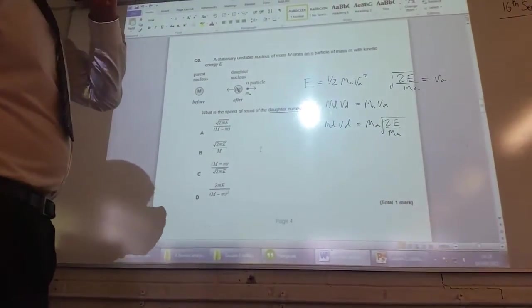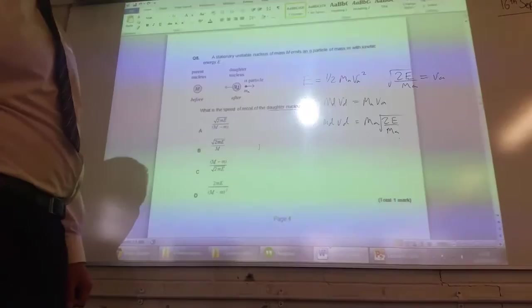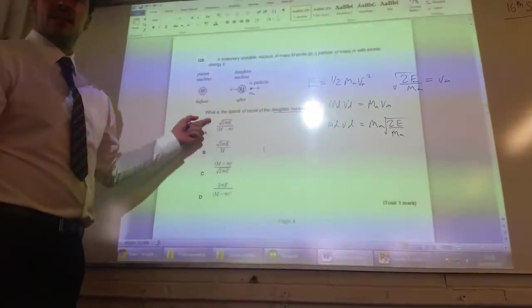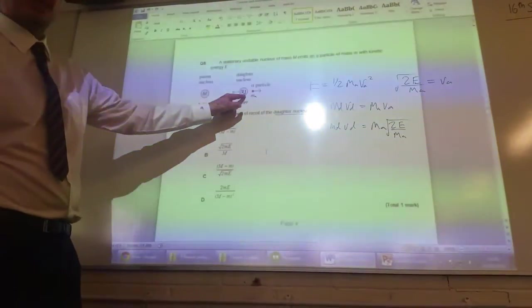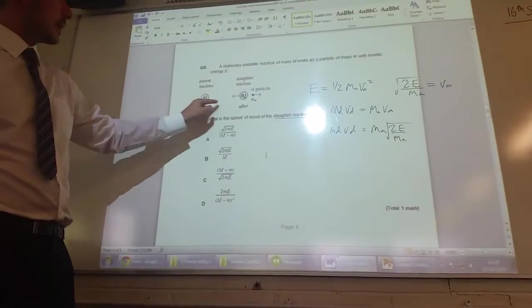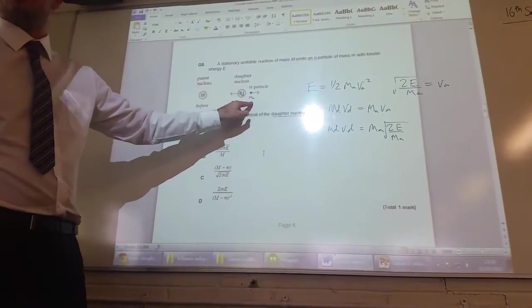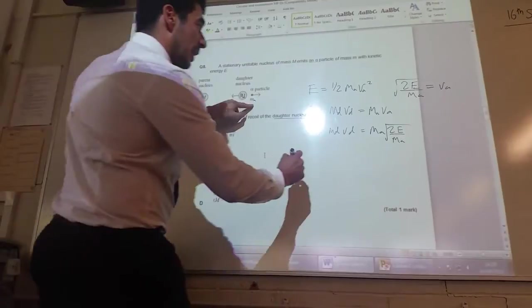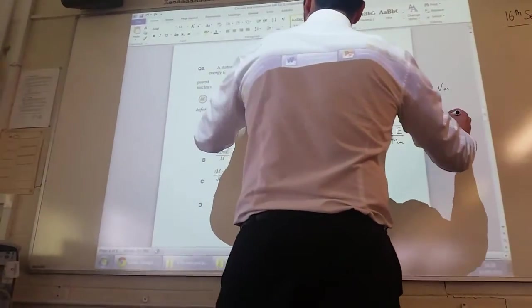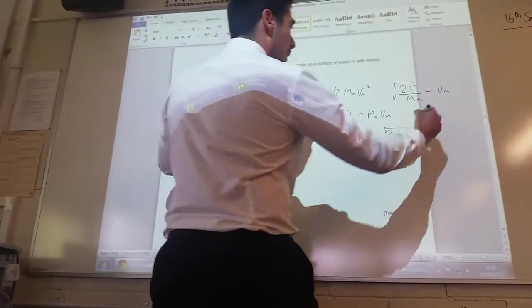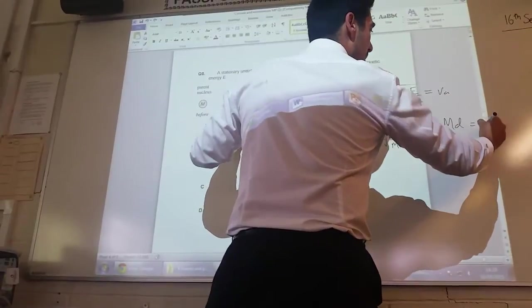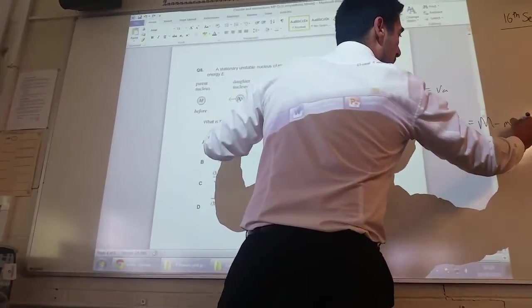Now, if I look at these answers here, there's no MD, there's only M. So I can express MD in terms of M and MA, because actually, I'll do it over here, MD will be the same as the big mass minus the little mass of the alpha particle. So I'm going to use this term for that.